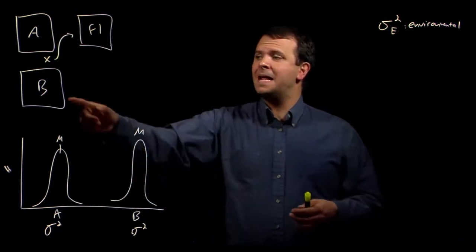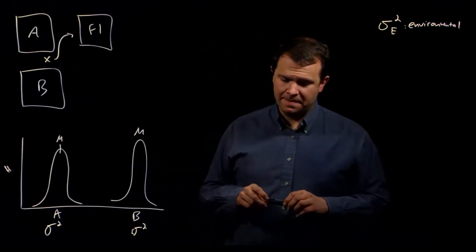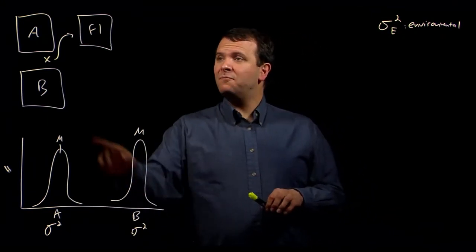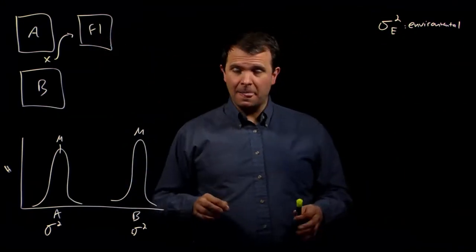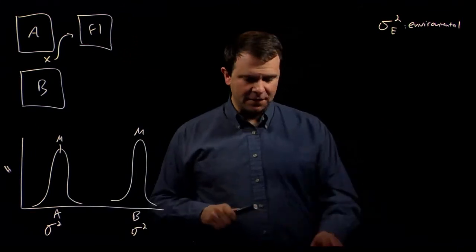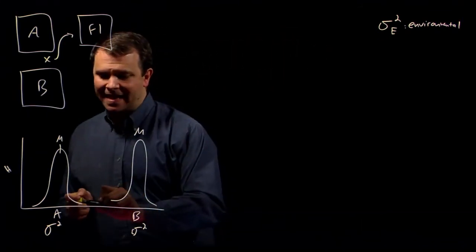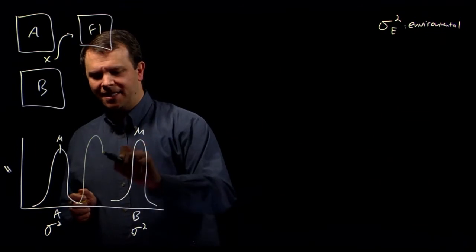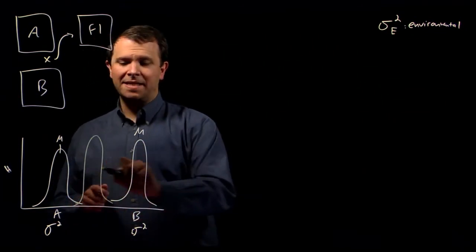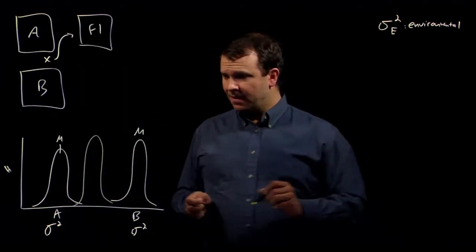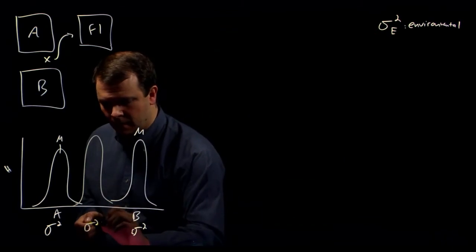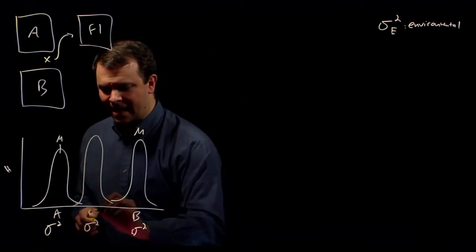And so when we look at the distribution of the plants from our F1 plot, we find that they're still quite tightly distributed, σ² of the F1.